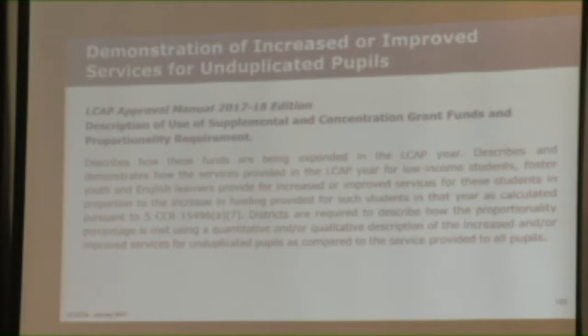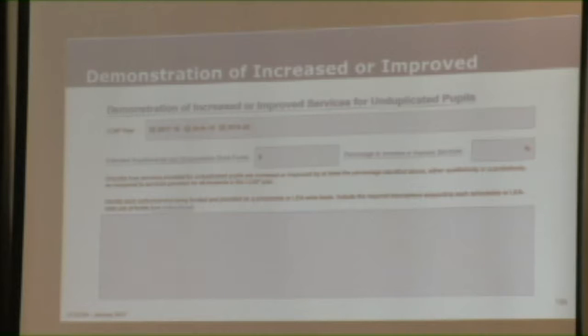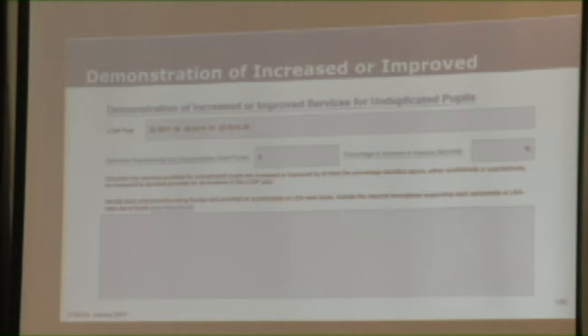So why are we talking about all of this? We are looking here at the actual template, and I'm trying to get us all to the point where we would be reviewing this description in the large box here at the bottom. We all know that the dollars for the supplemental concentration grant funds in the two boxes in the middle come from our LCFF calculator, as well as the percentage. But what we're here today to talk about is what's going in that big box.